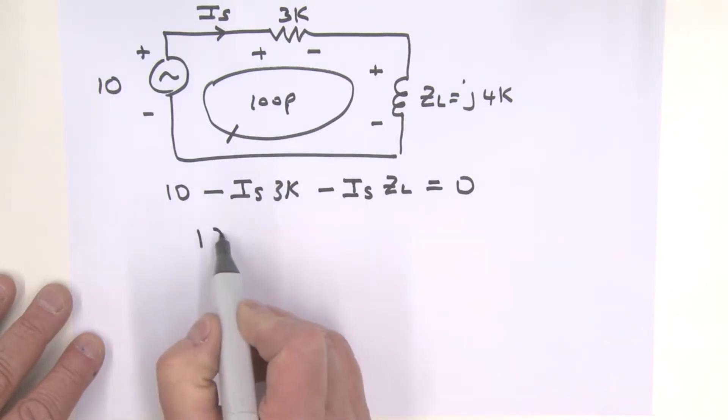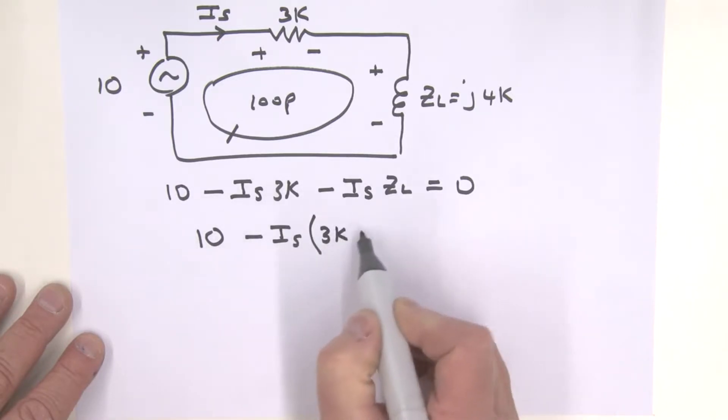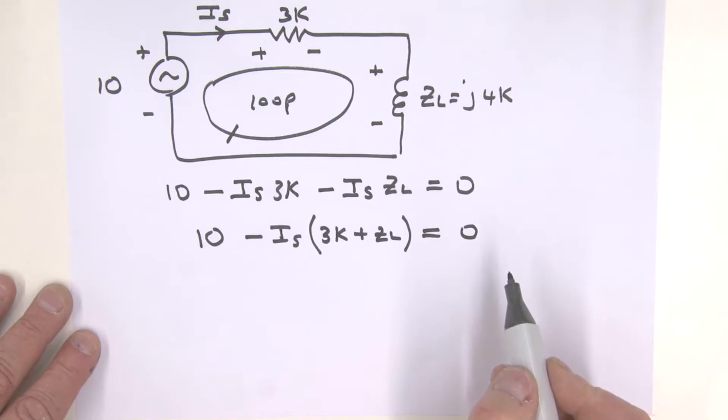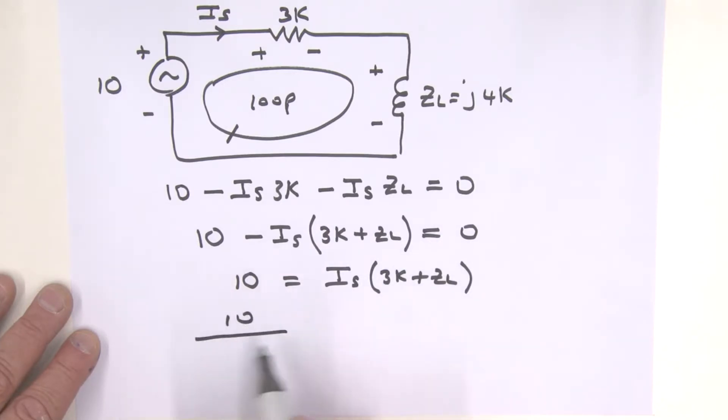Let's collect the IS terms. We have 10 minus IS times open bracket 3K plus ZL close bracket, all is equal to zero. Now if we take this part over to the other side, we have 10 is equal to IS times open bracket 3K plus ZL. If we divide both sides by this term, that's 10 divided by 3K plus ZL is equal to IS.